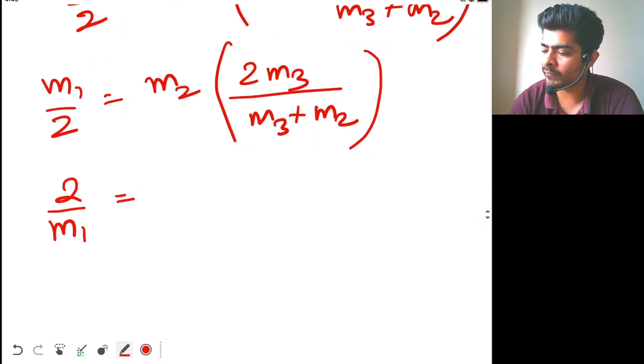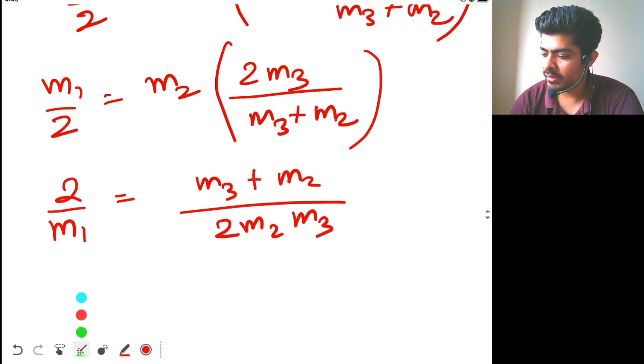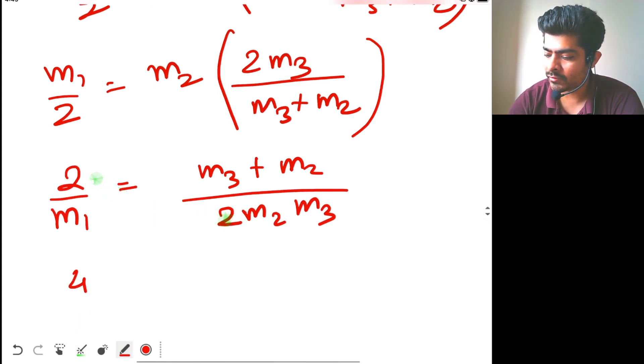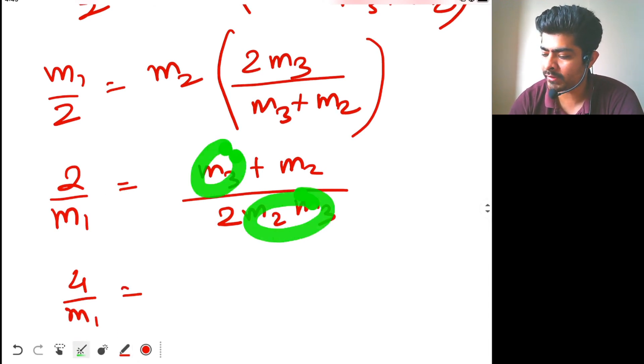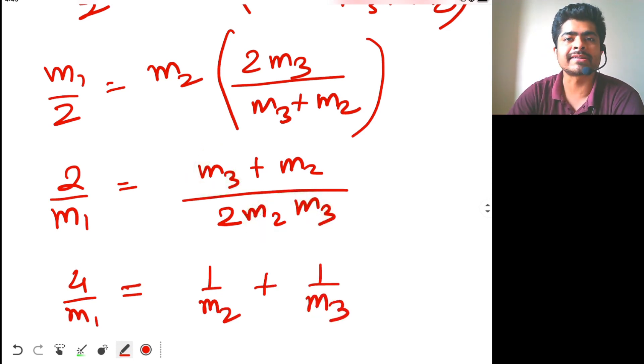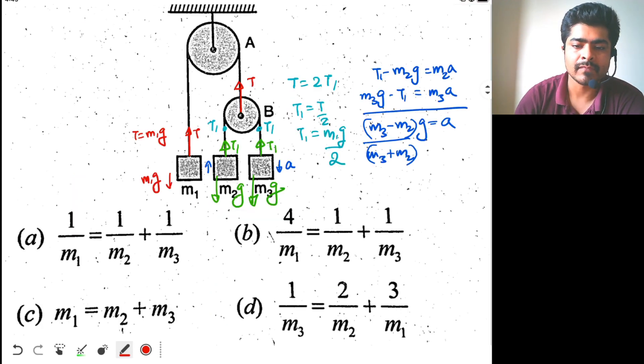So 4 by m1 will be equal to - now (m3 plus m2) divided by m2m3 will give you 1 by m2 and similarly 1 by m3. So this is the answer: 4/m1 = 1/m2 + 1/m3. The correct answer will be option b.